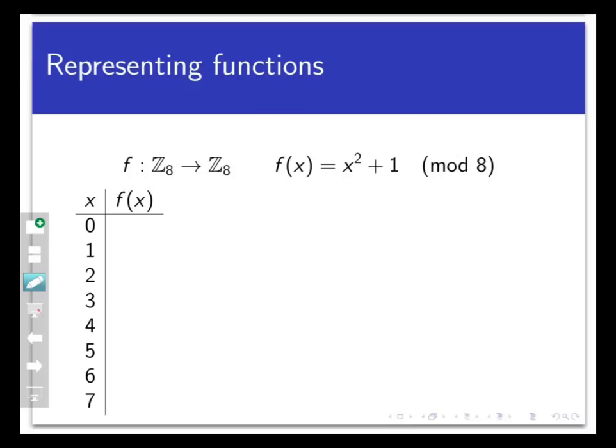We know the codomain and the domain, and the process is defined by a formula. Now notice that the domain and codomain are both finite here, so we could write this out as a table as well as a formula. Here is that table, and while I'm writing it out, you should check these entries to make sure you understand the process.